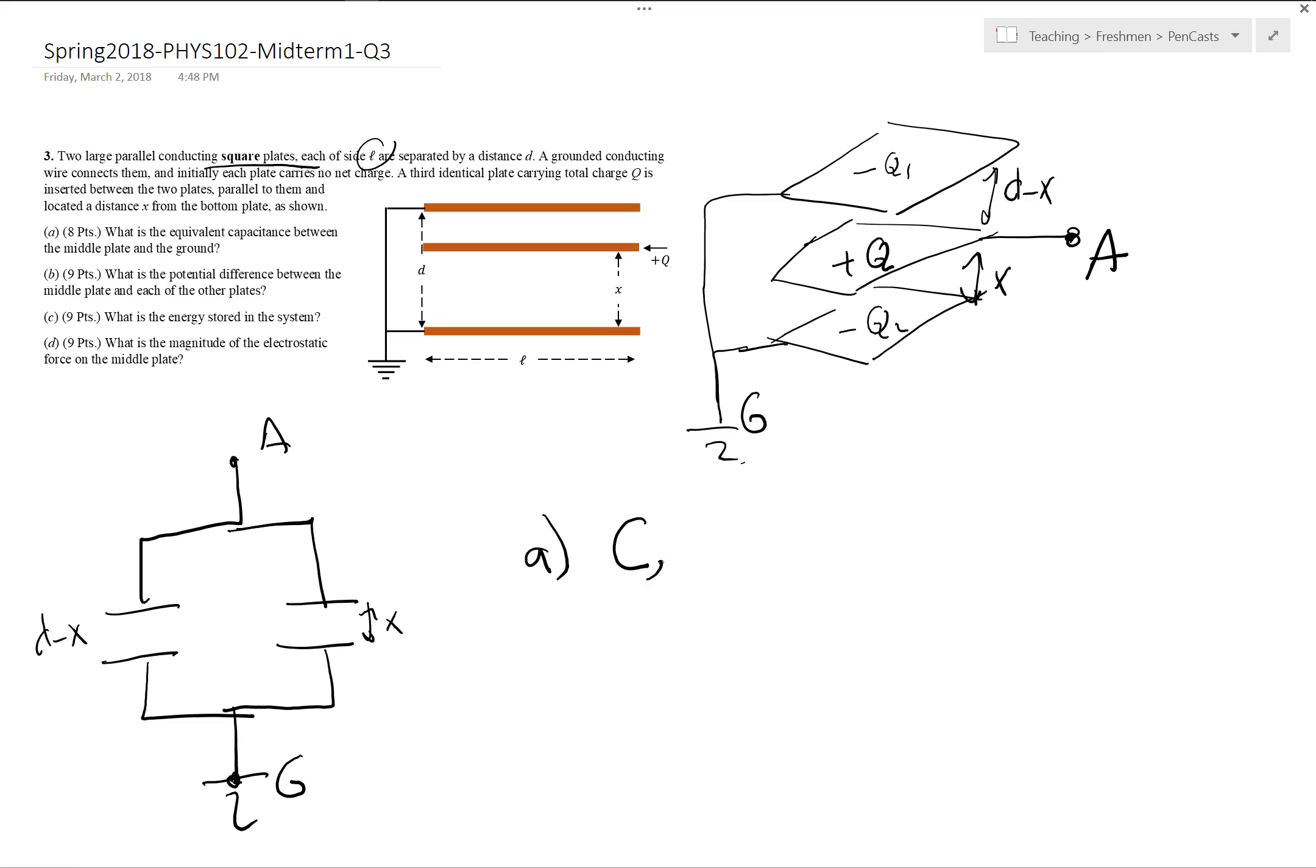So the equivalent capacitance, epsilon 0, the area is L squared. The distance between the capacitors for the upper capacitor is D minus X. For the second one, epsilon 0, L squared, X.